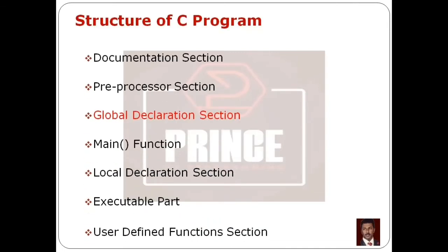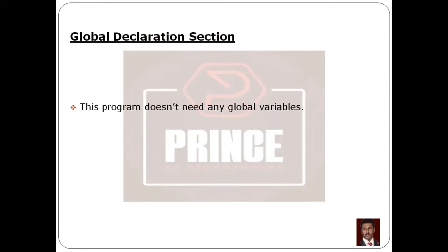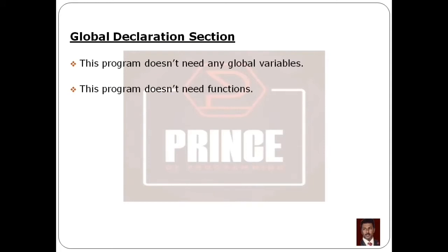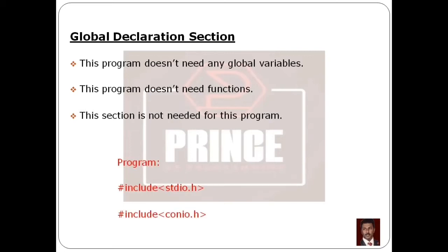The next section is the Global Declaration section. After the preprocessor section, we need to declare any global variables here. For this program, we don't need any global variable — we are just printing the word hello. So the Global Declaration section is not needed for this program.